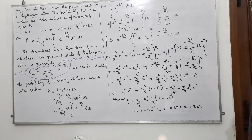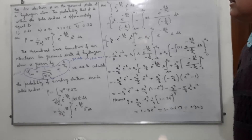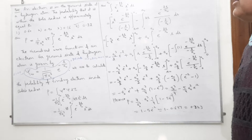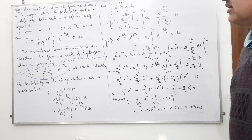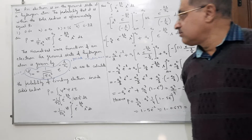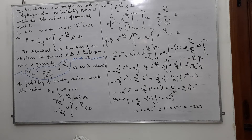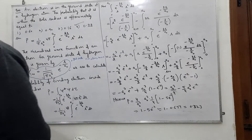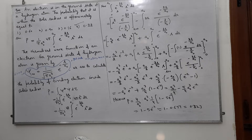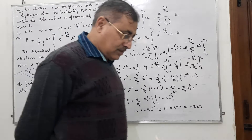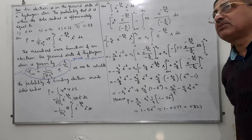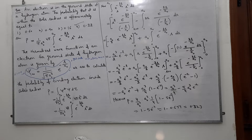This is a very popular question related to the hydrogen atom. An electron is in the ground state of the hydrogen atom. The problem asks for the probability that it is within the Bohr radius. The answer is approximately 0.32. The Bohr radius standard value is 0.53 Angstrom — it is the mean radius of the first orbit of the hydrogen atom.